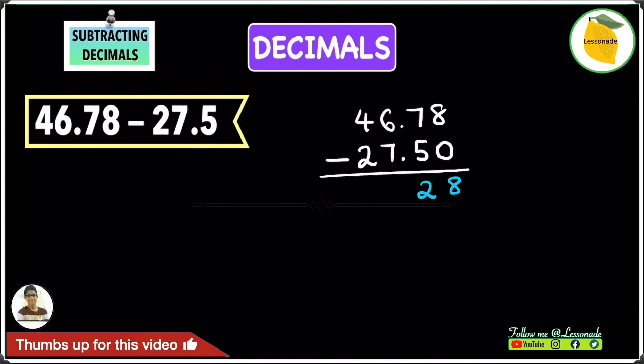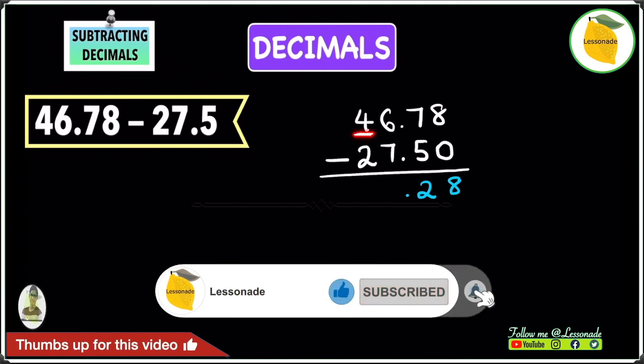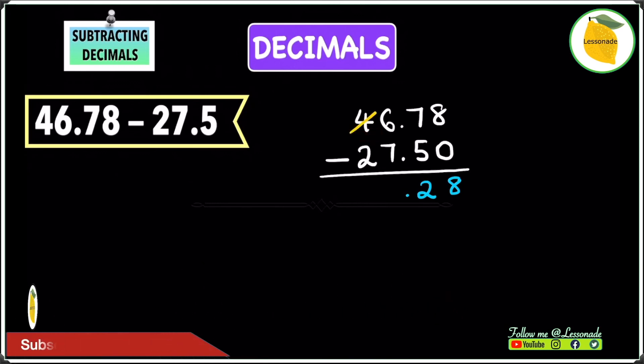Then we have 6 minus 7. We know that 6 is smaller than 7, so we have to borrow from the number next to it, which is 4. Borrow a 1 from the 4. The 4 will become a 3, and add a 1 in front of the 6 to make it 16.